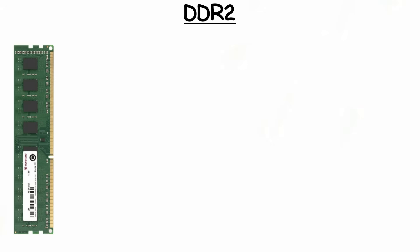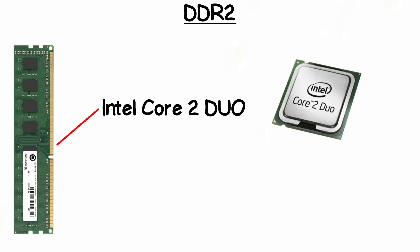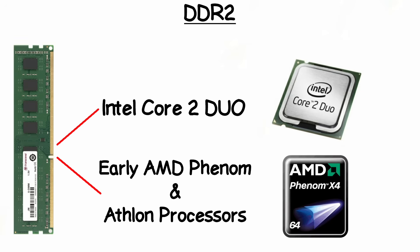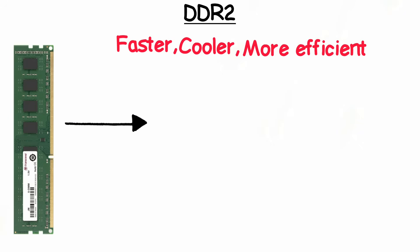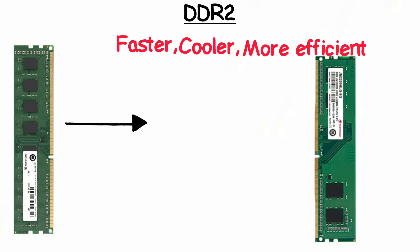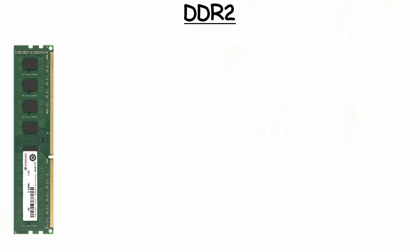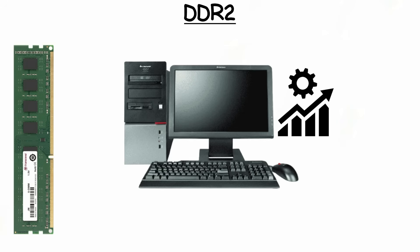DDR2 was widely used with Intel Core 2 Duo and early AMD Phenom and Athlon processors during the mid-2000s. It was a major step forward in memory technology — faster, cooler, and more efficient than its predecessor DDR1 — and played a crucial role in enhancing computer performance during the mid-2000s era.